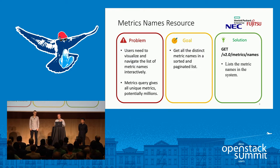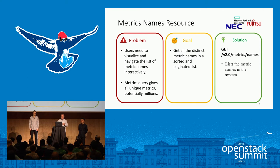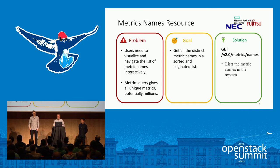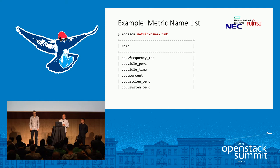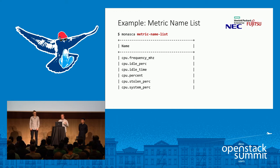There is also a new metric names resource. When navigating metrics, you typically go from metric name to dimension name to dimension values. The previous get metrics API would return all metrics in the system — potentially millions — requiring client-side filtering for distinct names. The new API lets you request just the metric names in a sorted, paginated list. A partial example shows names like CPU frequency up to CPU system percentage, with several hundred entries in the full list.